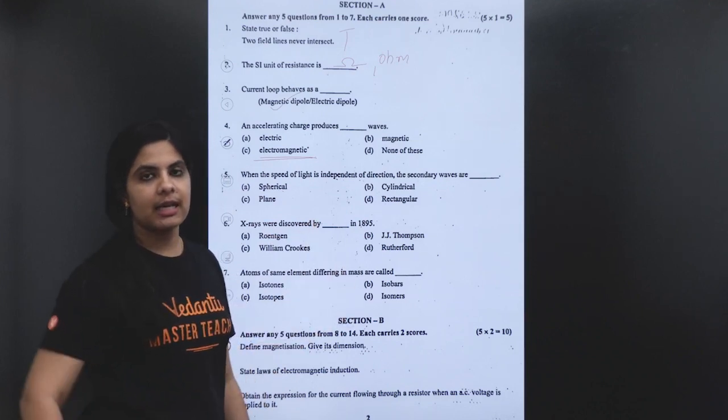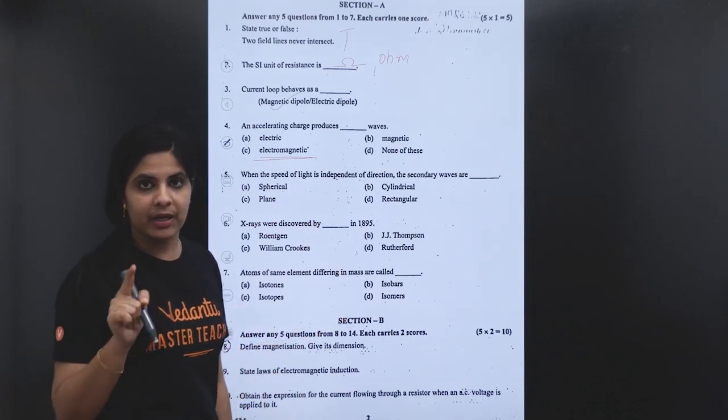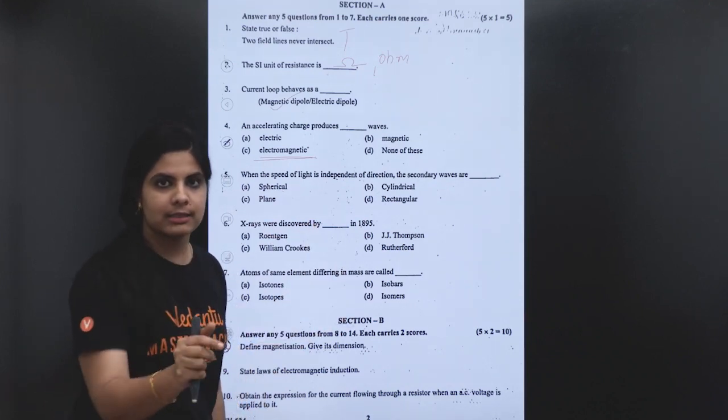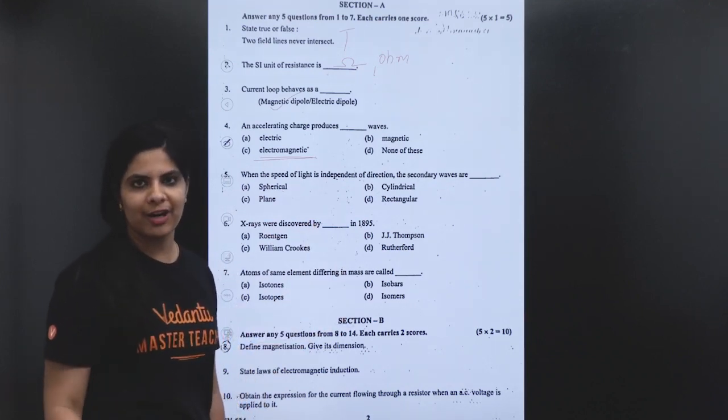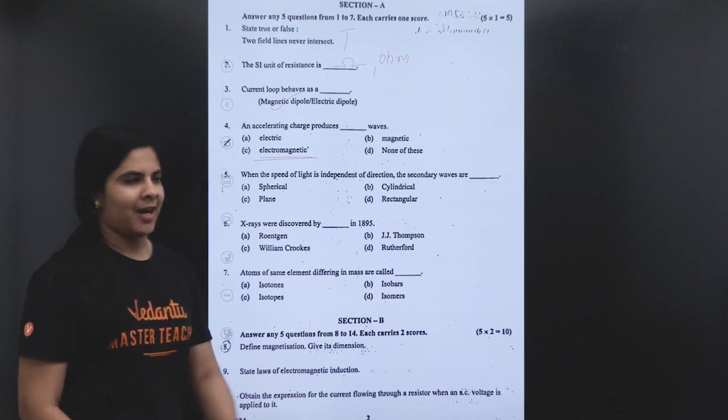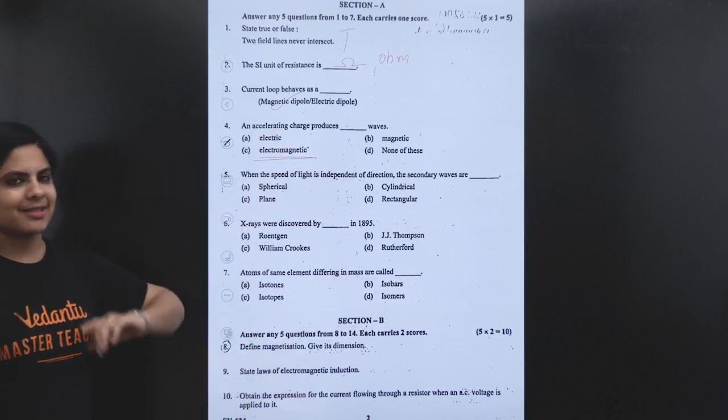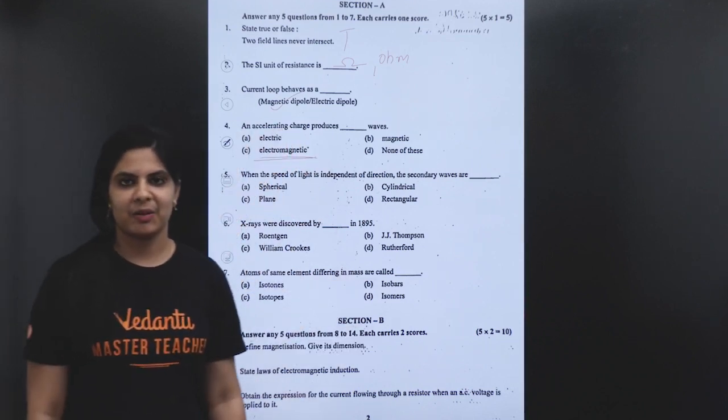Current loop behaves as a magnetic dipole. An accelerating charge produces electromagnetic waves. This is in the electromagnetic waves chapter content. This answer is no matter — let me clarify.